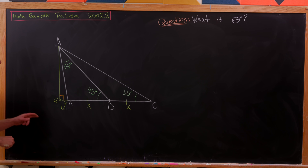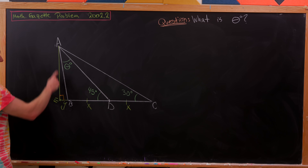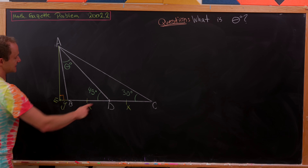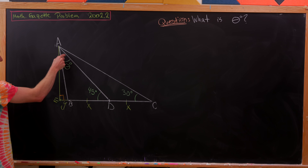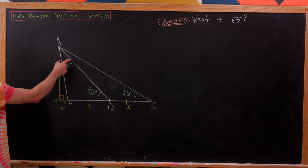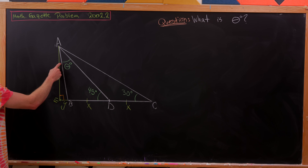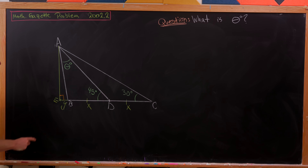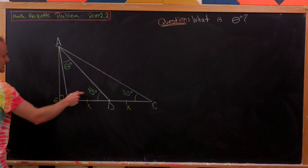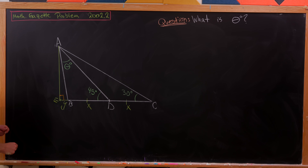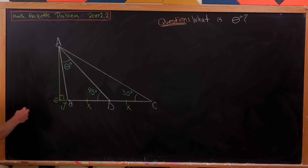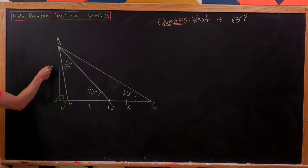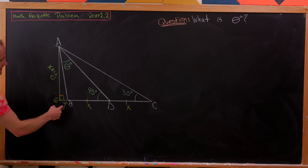Notice that triangle AED is a 45-45-90 right triangle, where the 45 degrees is theta plus angle AEB. We know that's 45 degrees because the angle sum of a triangle is 180, and here we have 90 plus 45. From that, ED equals AD since they're opposite equal angles in an isosceles triangle. So the length of EB is x plus y.